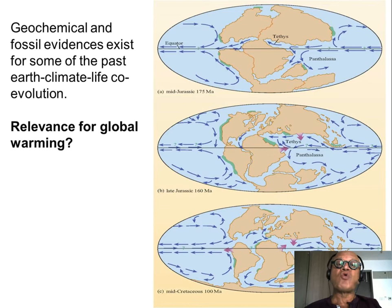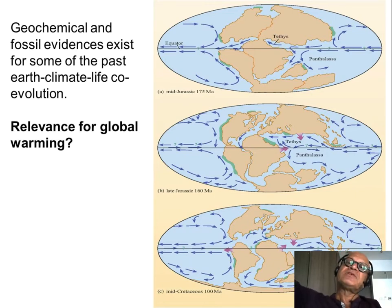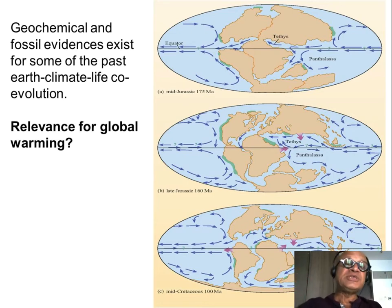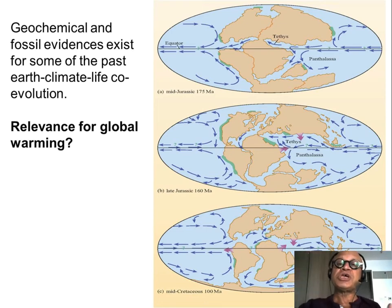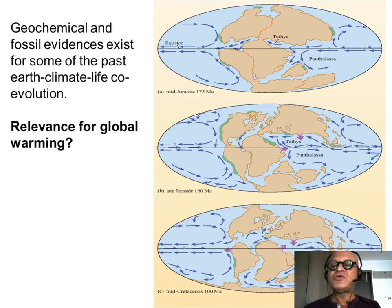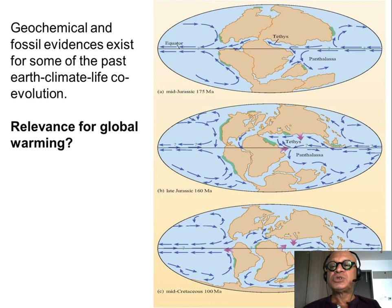We will see more into exactly how these models are built. We can rearrange the continents in the models as we want, give it the energy from the sun, and we can see how the ITCZ changes, how the winds change, how the equator-to-pole temperature gradients change, how the ocean circulations change, and so on.